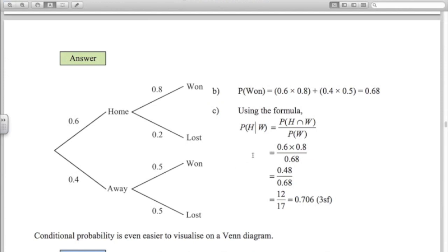So same tree diagram as before. I'm going to use the formula for part C. The probability they're at home given that they've won. So it's important to get the order right. Here's the probability that they're at home and won. So that's the top line of the tree diagram, 0.6 times 0.8 divided by the probability that they've won. Now the probability that they won is 0.6 times 0.8 plus 0.4 times 0.5. That's what we looked at in part B. We looked this out earlier as well. So that gives us 12 over 17 or 0.706. So there's a 70.6% chance that they were playing at home given that we know that they won.